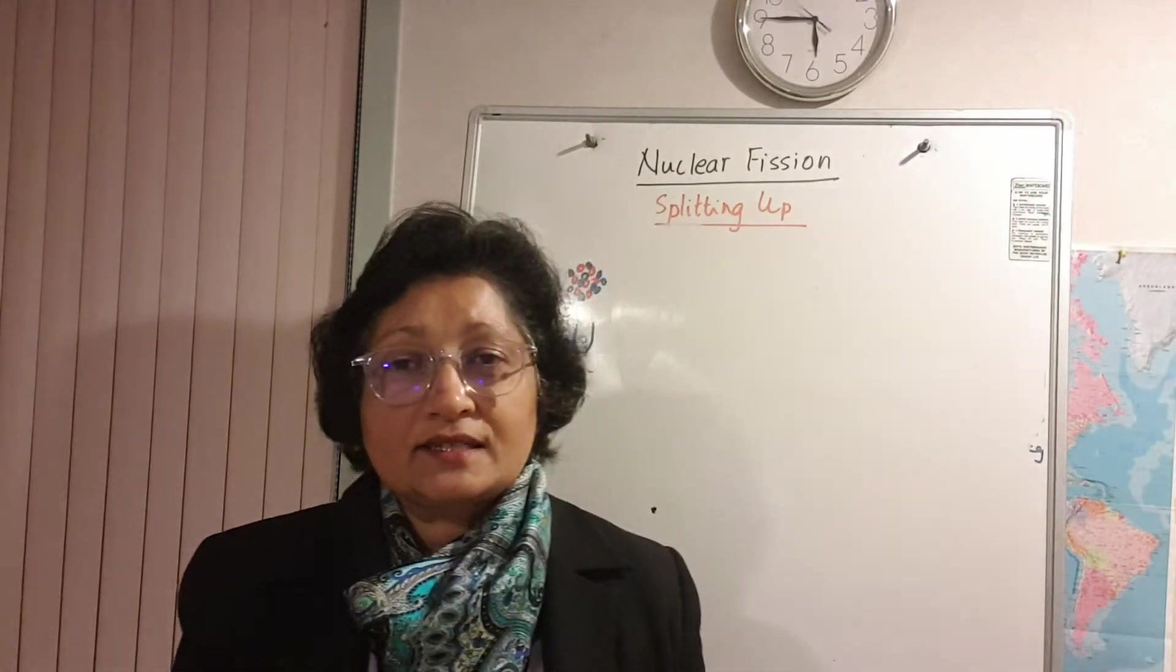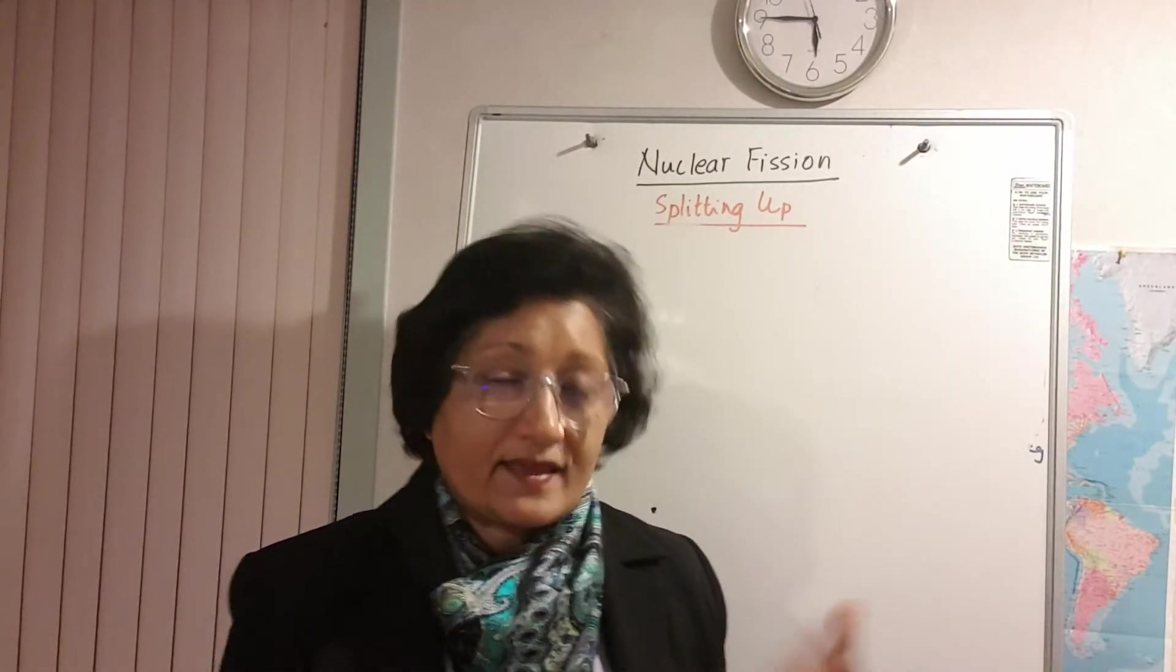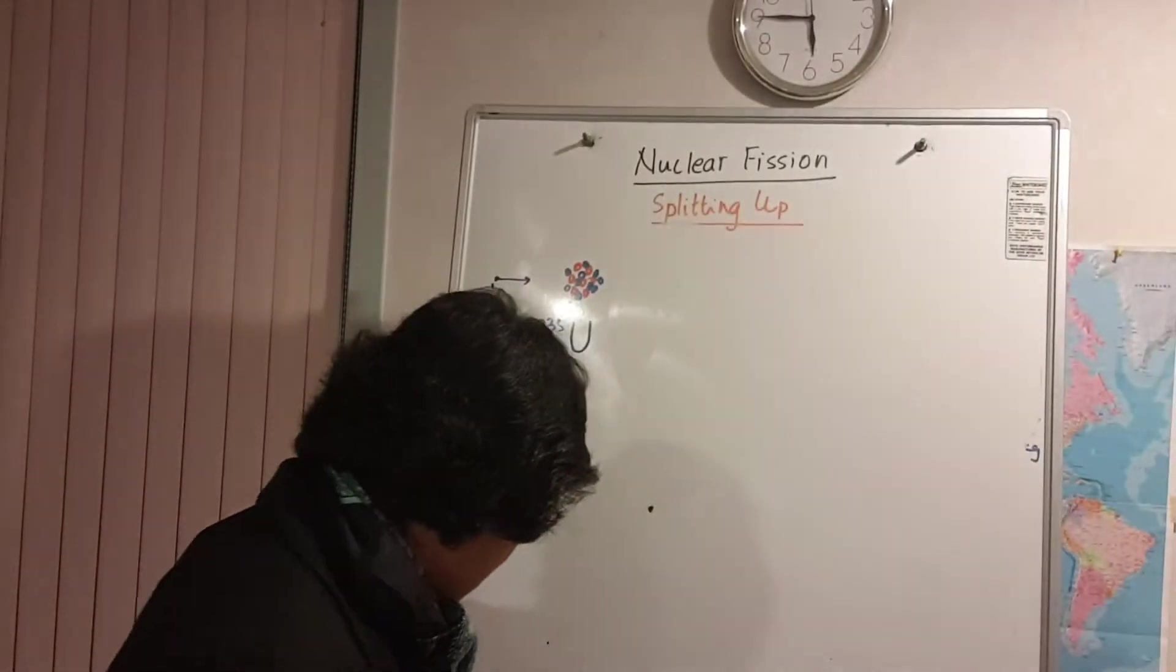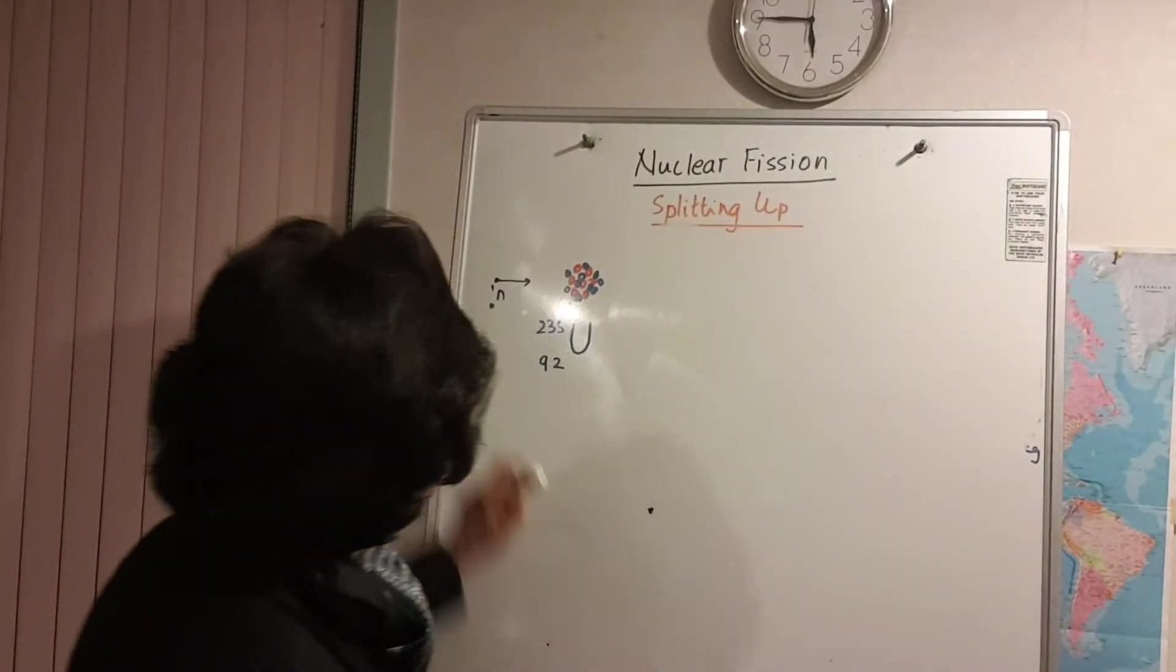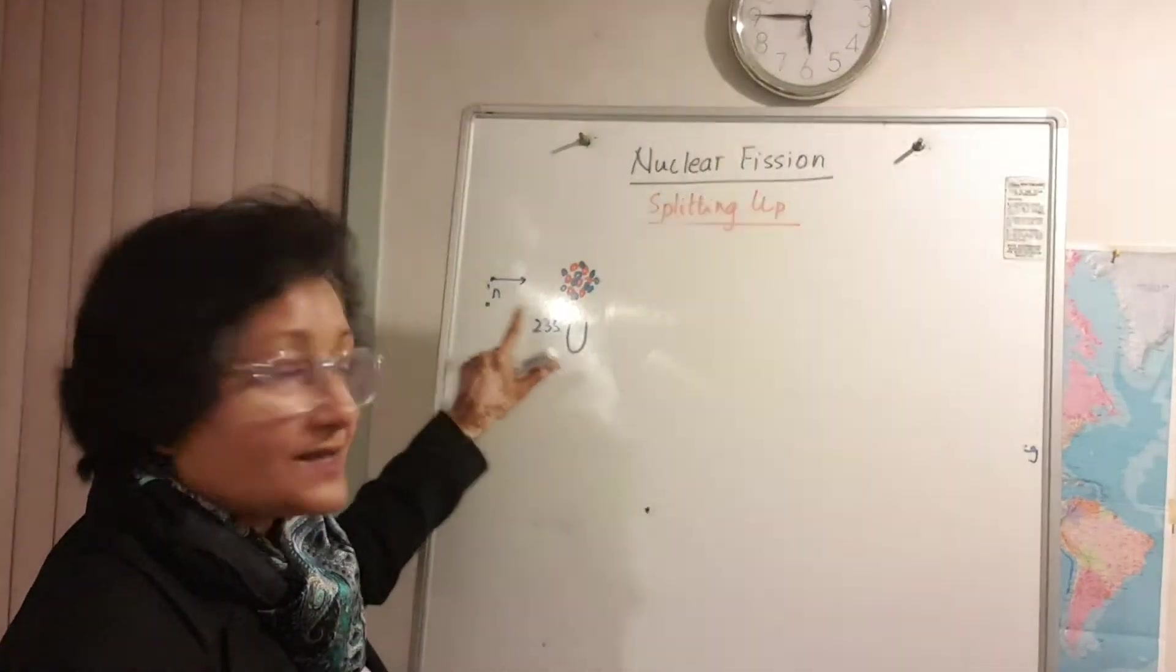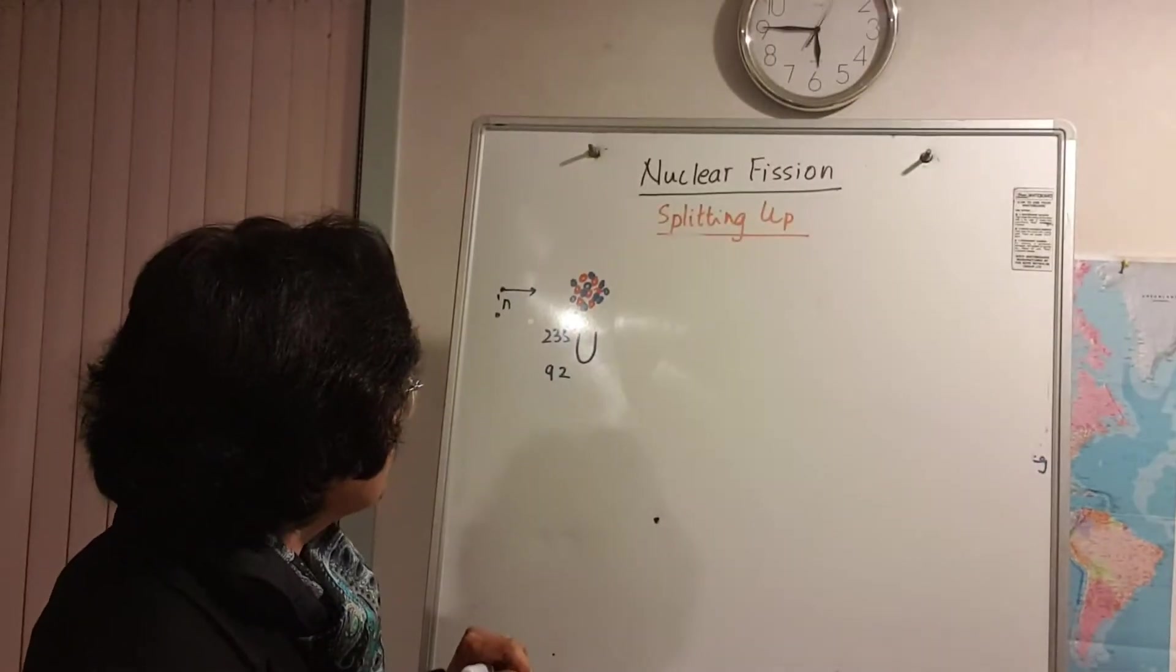Now there are many ways a uranium nucleus can split into two medium-sized nucleons and I'm just showing you one way that it can split up. So for example, a slow-moving neutron is captured by uranium-235.